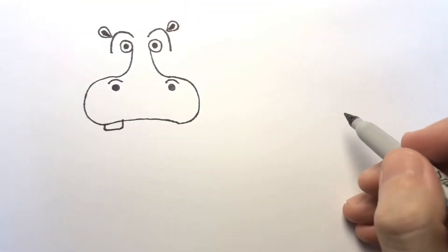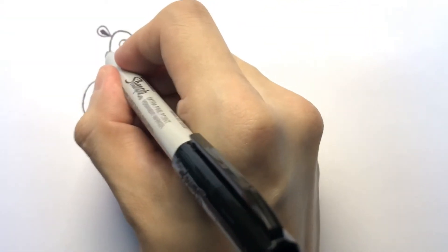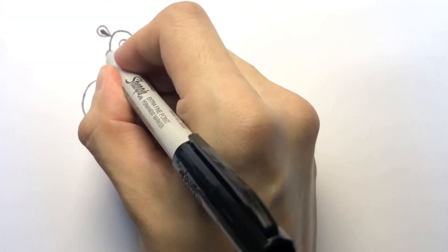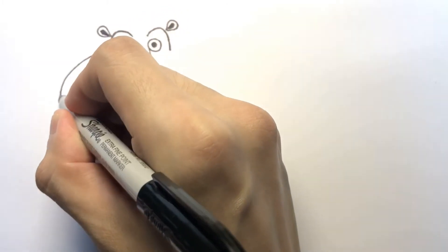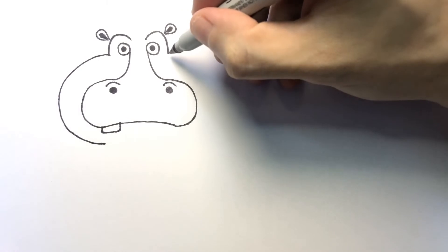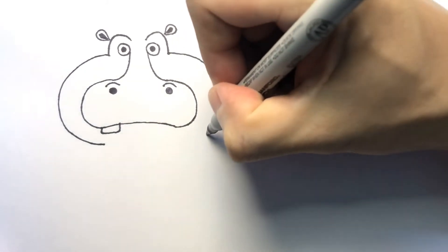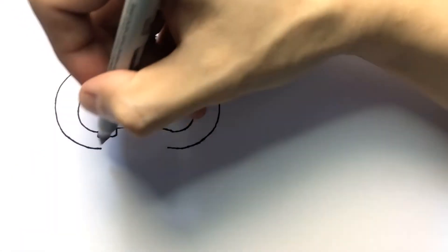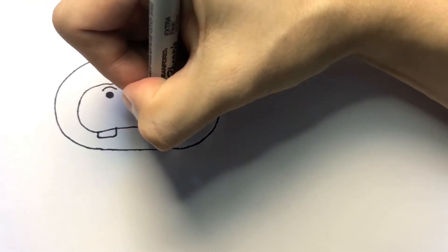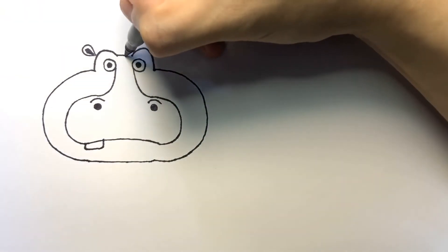And let's draw the shape of the face. Easy. Big letter C and the inverse letter C. There you go. And combine the line. There you have it. Combine the line there.